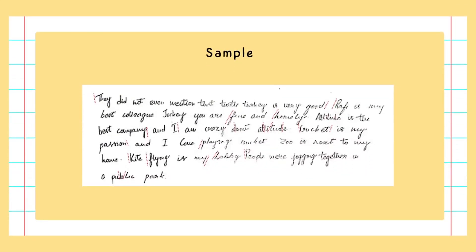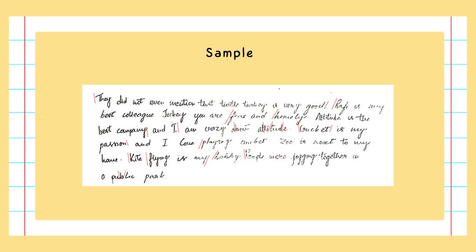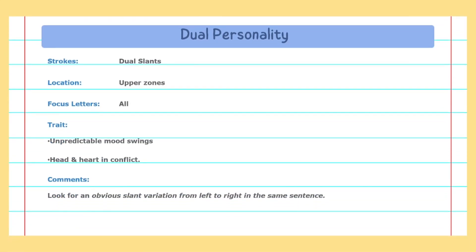Here is another handwriting sample where the alphabets again go sometimes left and sometimes right. This is what we call dual slants — the strokes, meaning the direction the alphabets are going, is what determines the slant.